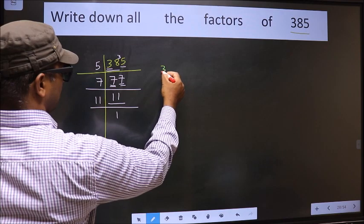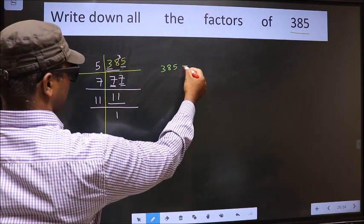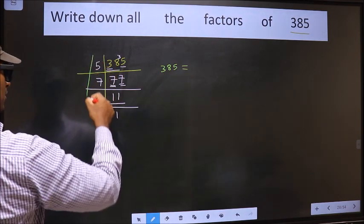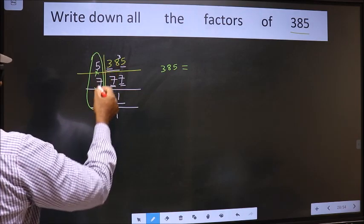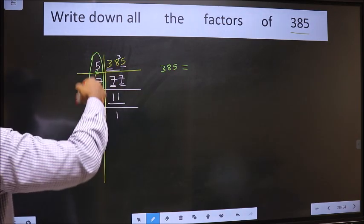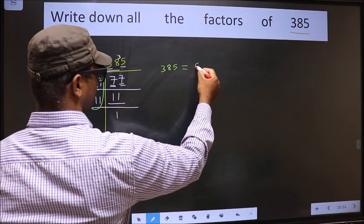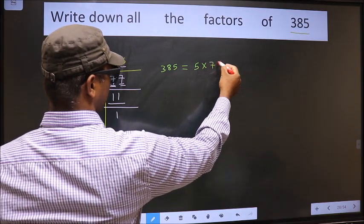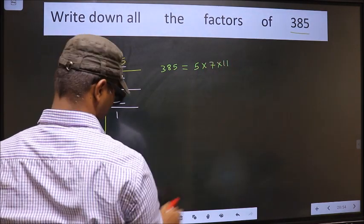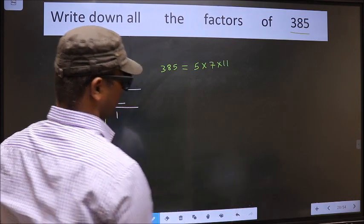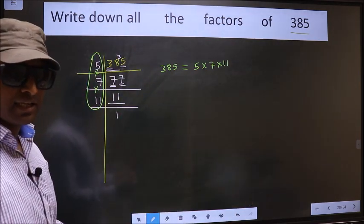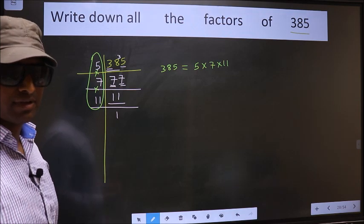So now 385 is equal to the product of these numbers, that is 5 into 7 into 11. Now let us write down all the factors of it.